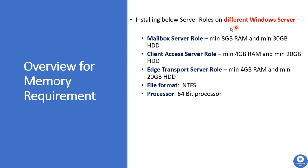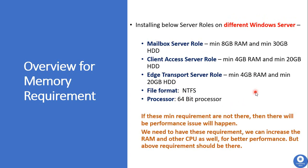For installing Exchange Server 2013 on different or multiple Windows servers, to install the Mailbox Server role we need a minimum of 8 GB of RAM and 30 GB of hard disk. To install the Client Access Server role we need a minimum of 4 GB of RAM and 20 GB of hard disk. The Edge Transport Server role also requires a minimum of 4 GB of RAM and 20 GB of hard disk. The file format supported is NTFS and the minimum required processor is 64-bit. These minimum requirements must be met, and RAM and CPU can be increased for better performance.